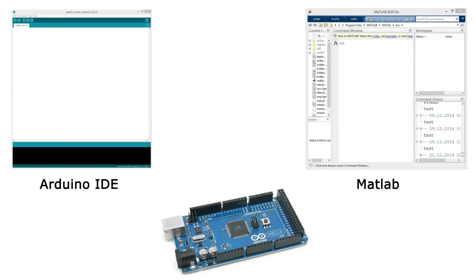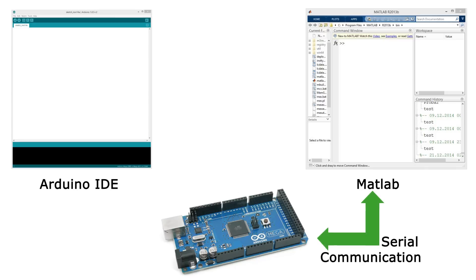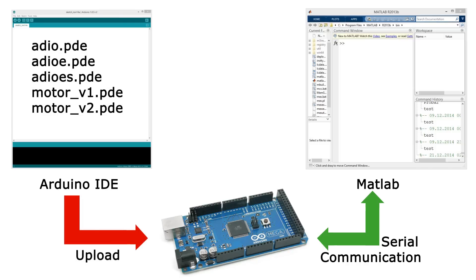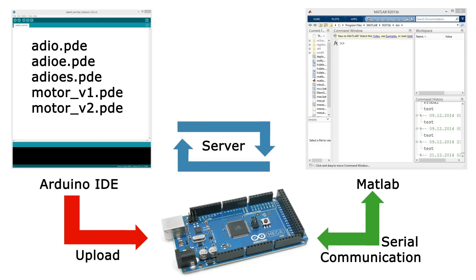The working principle is similar to the one explained in the previous tutorial for interaction between Arduino and Processing. We will use the serial port for communication between the Arduino board and MATLAB. First we need to upload a sketch to the Arduino board that will work as a server — it will continuously run on the Arduino, listen for commands arriving from the serial port, execute them, and if needed return an answer.